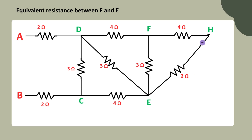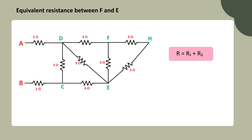Now let's look at how the current flows through the 4 ohm and 2 ohm resistors. Since the same current flows through both, they are connected in series. To find the equivalent resistance of resistors in series, simply add their values together. Substituting the values, 4 ohms plus 2 ohms equals 6 ohms.